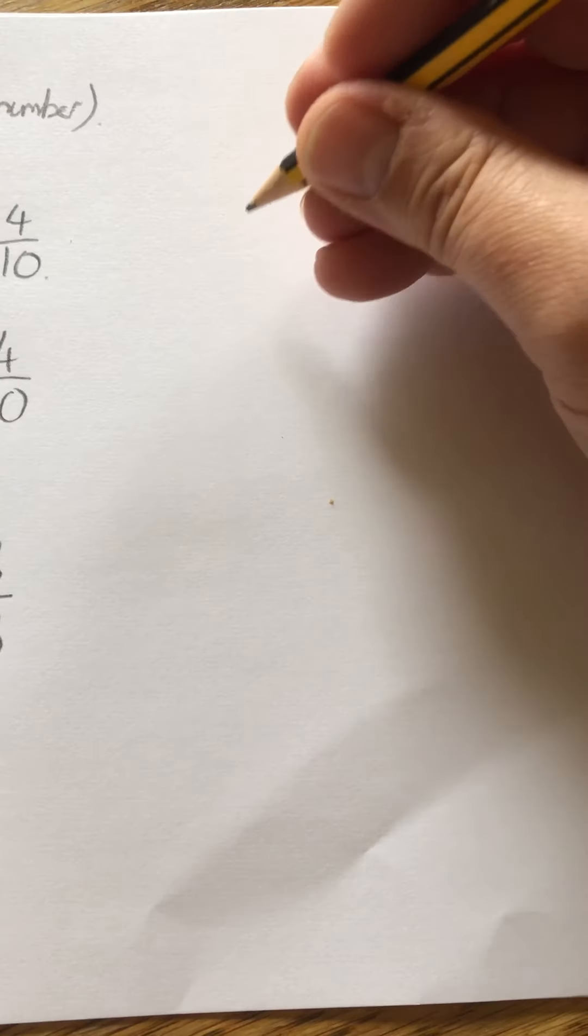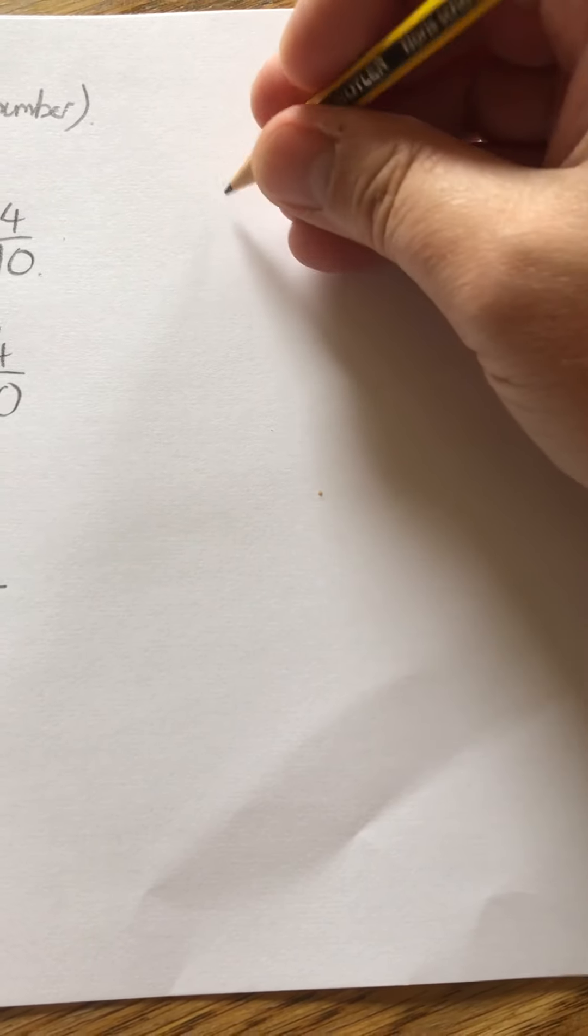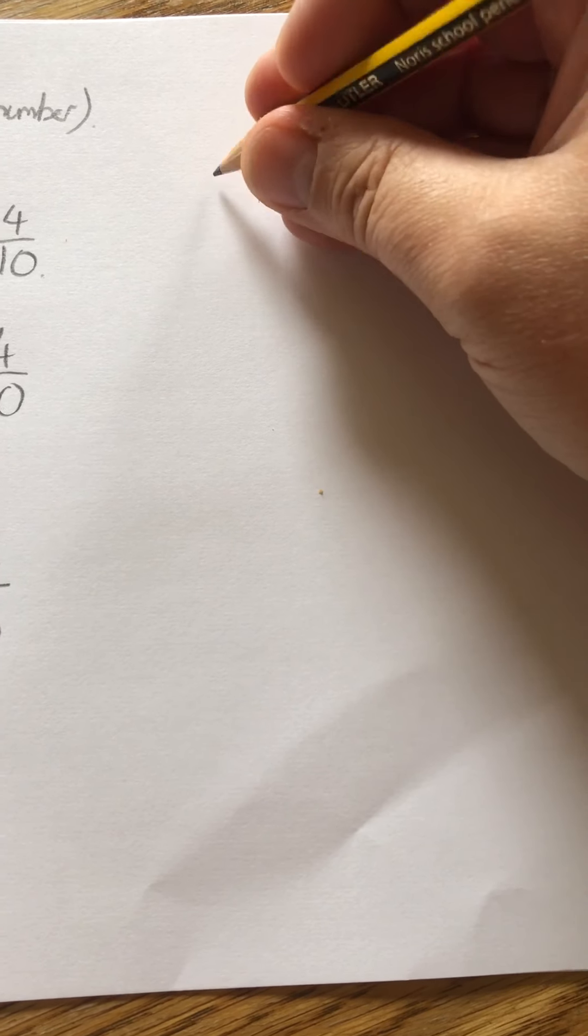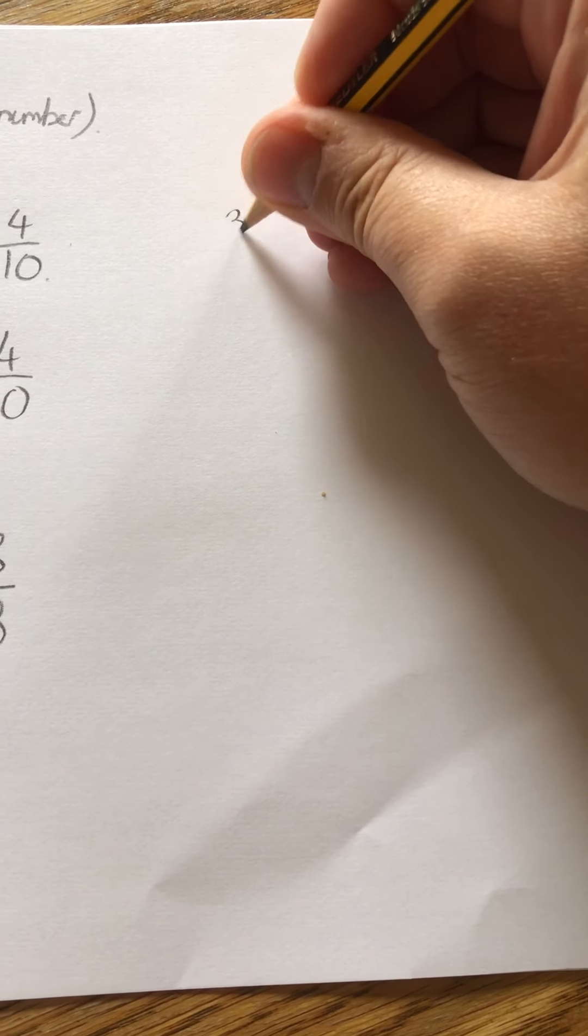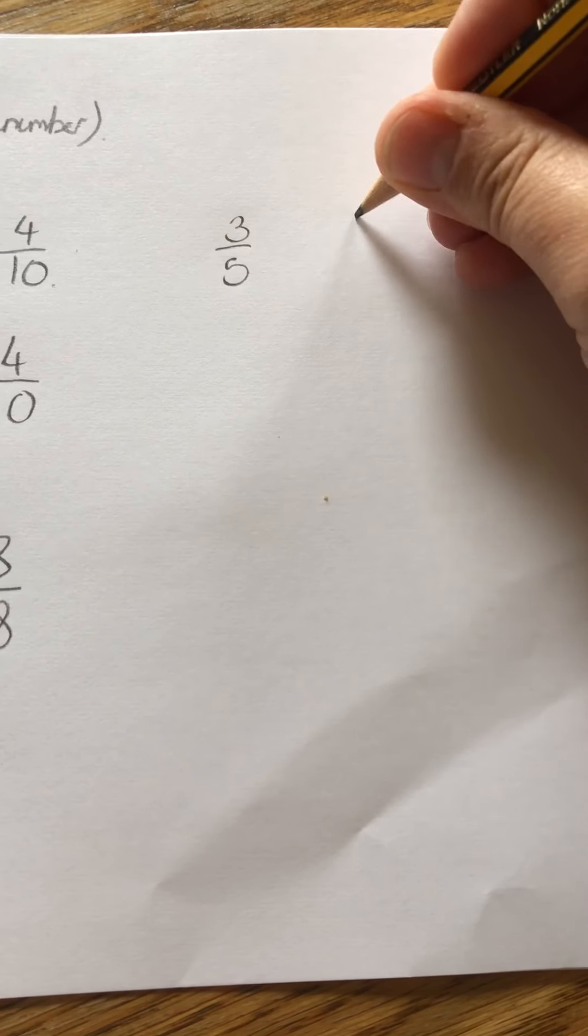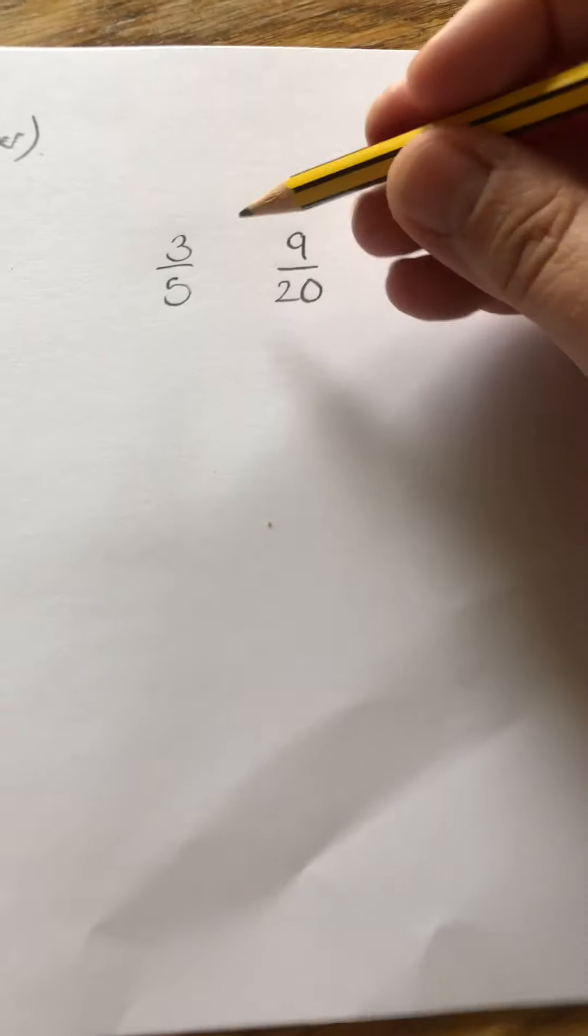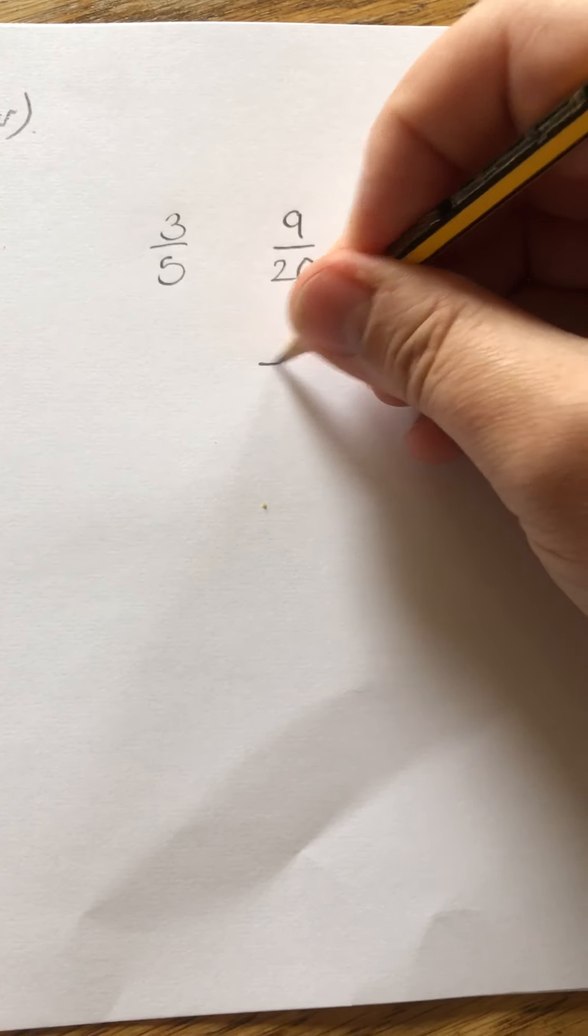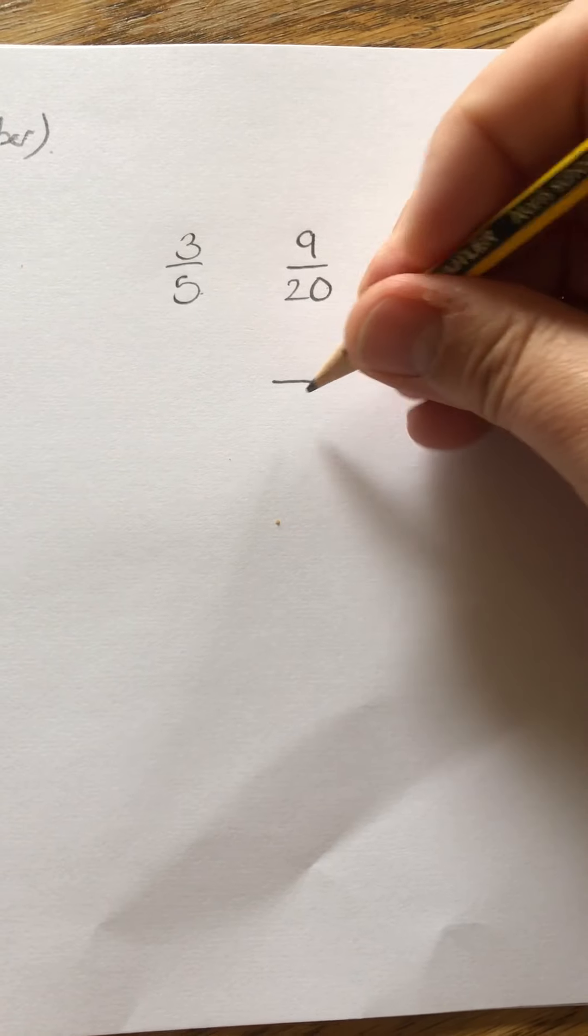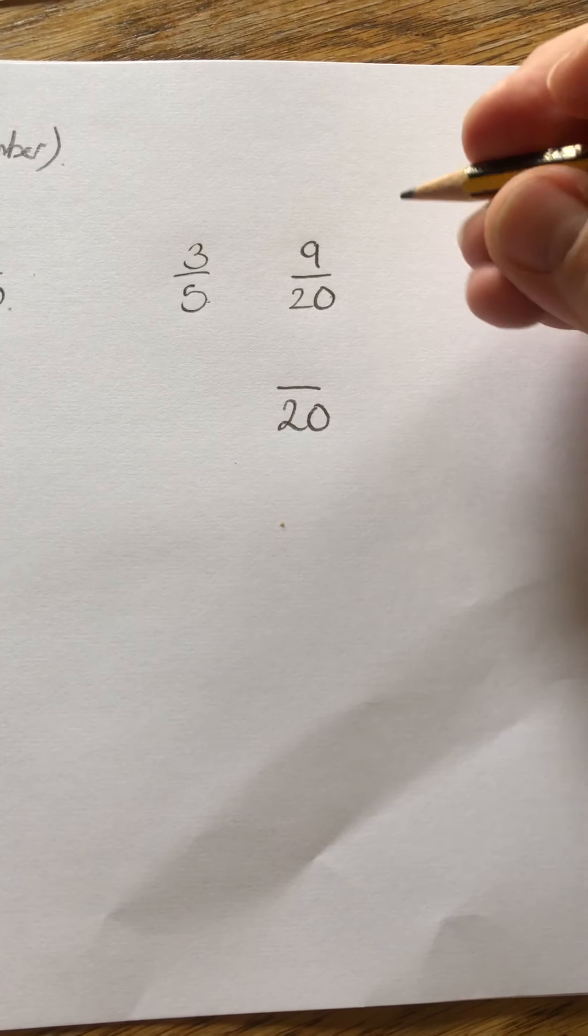I'll do one just when we're not multiplying by two each time. So let's try three fifths and nine twentieths. So which is the bigger? I can keep, I know that five goes into twenty. So I can keep the twenty.